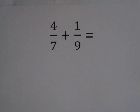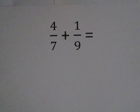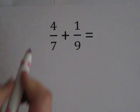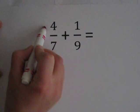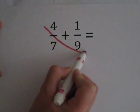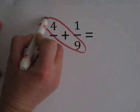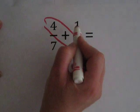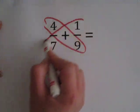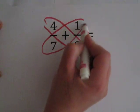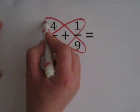We are going to add these two fractions using the butterfly method. We are going to multiply across to create our butterfly wings.